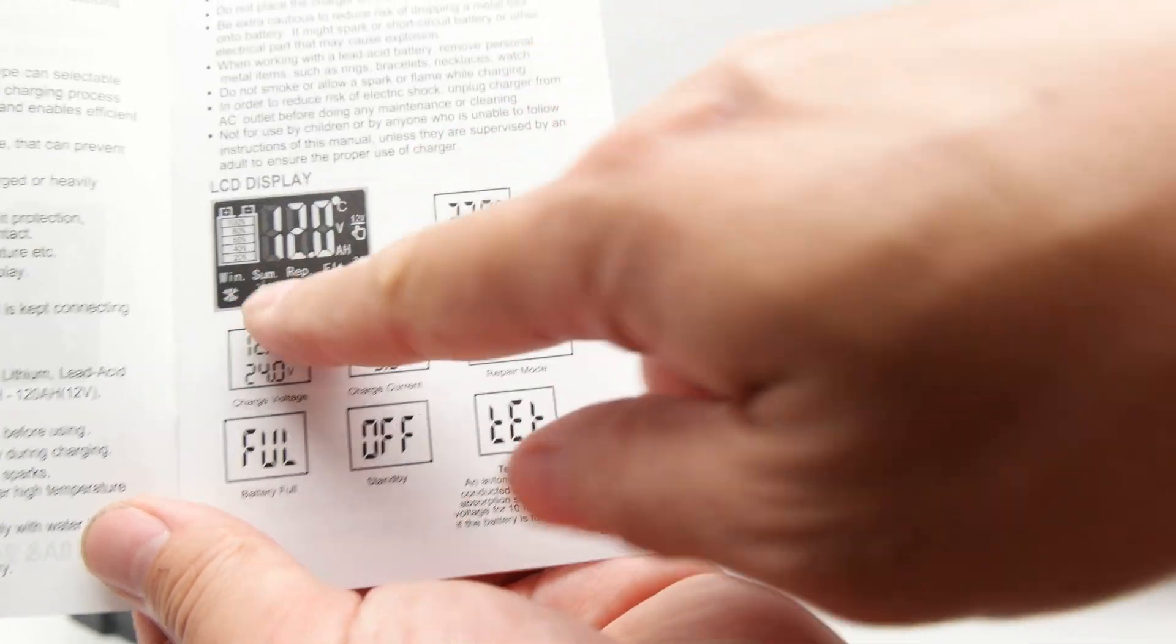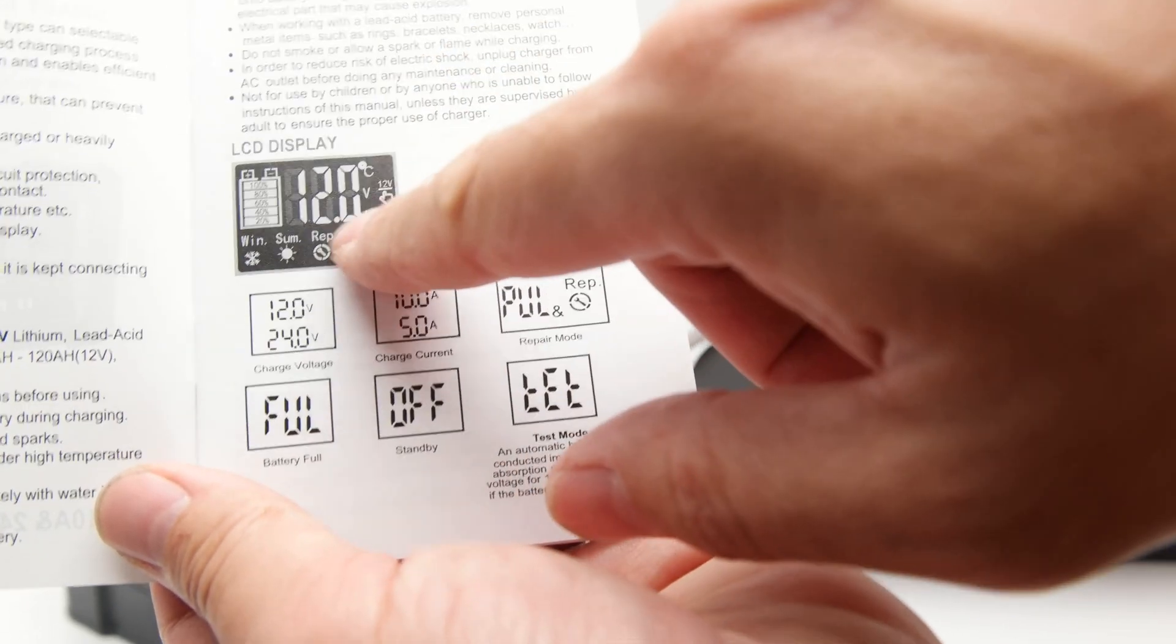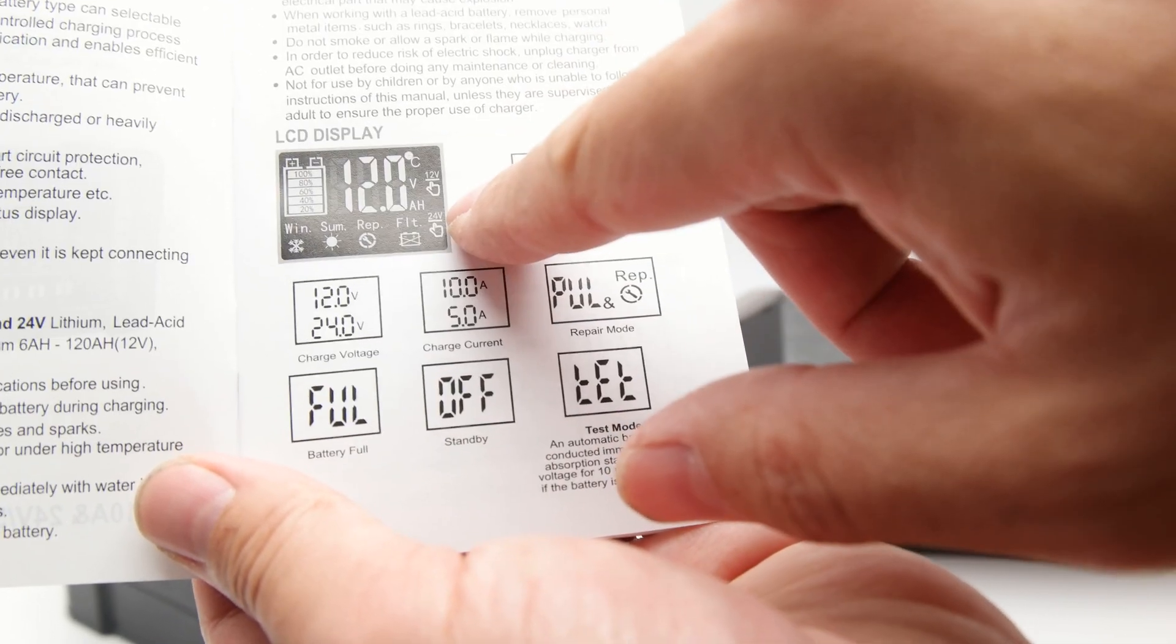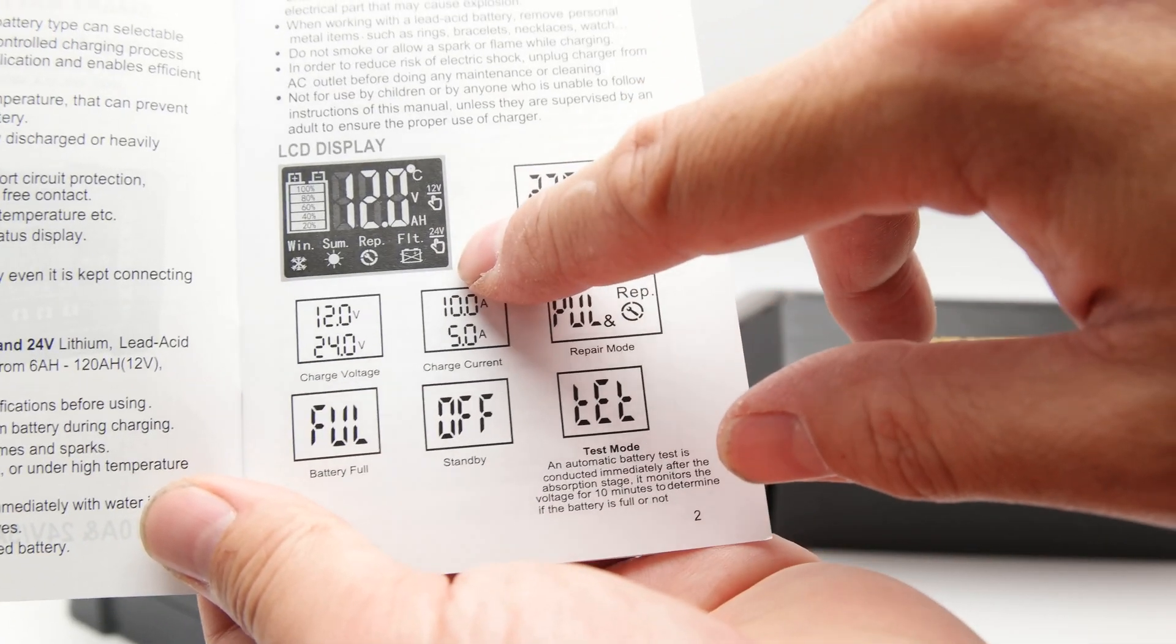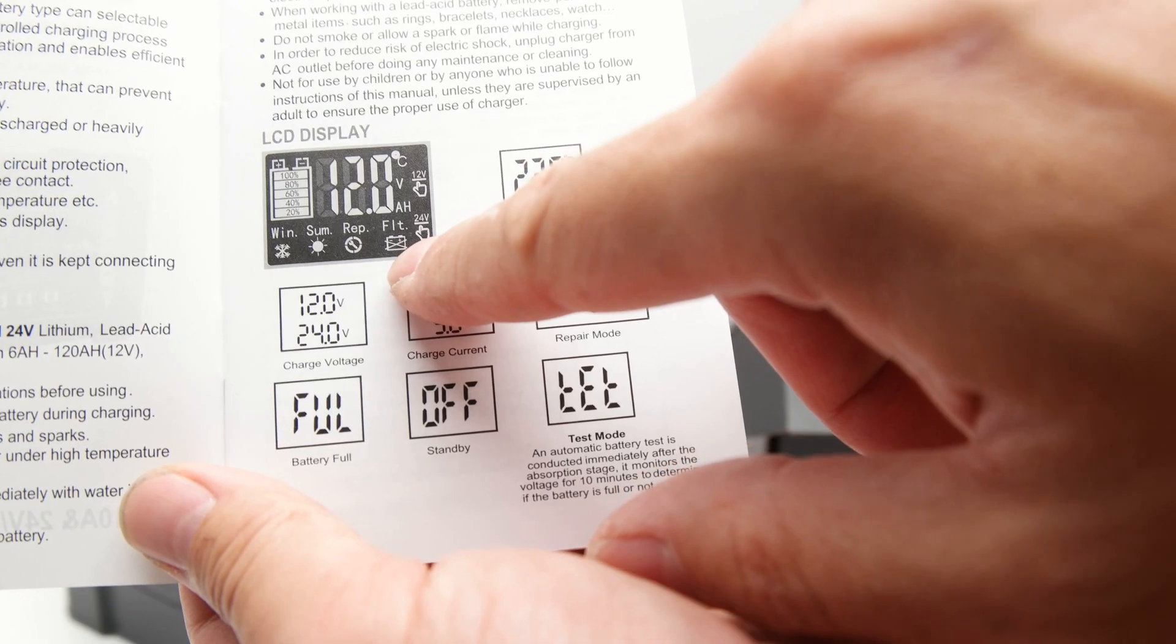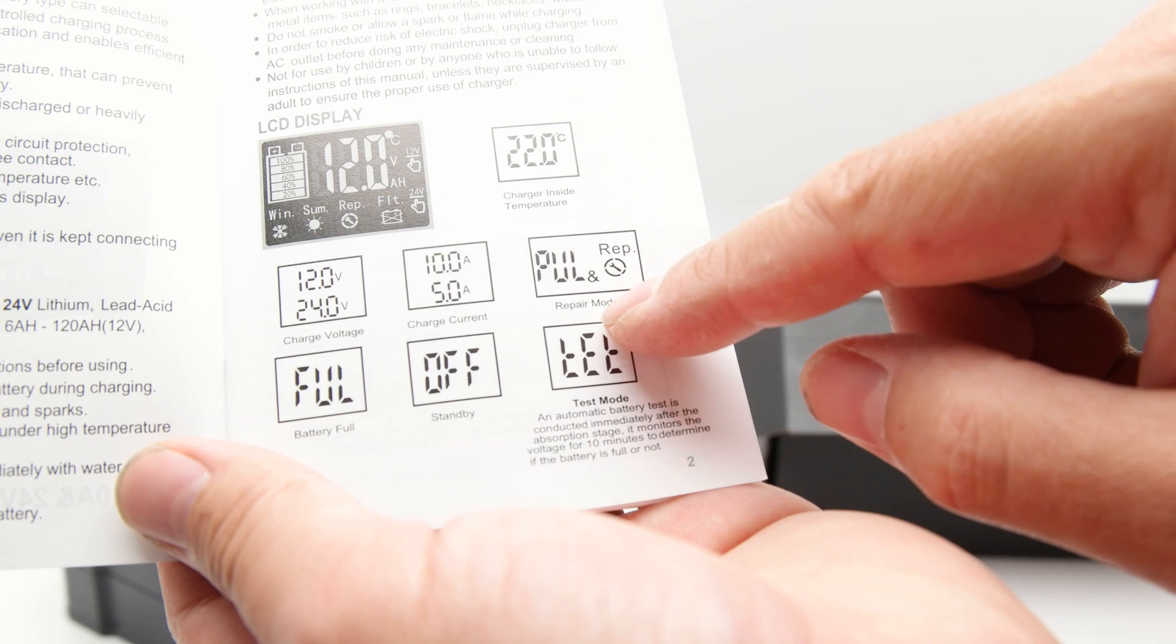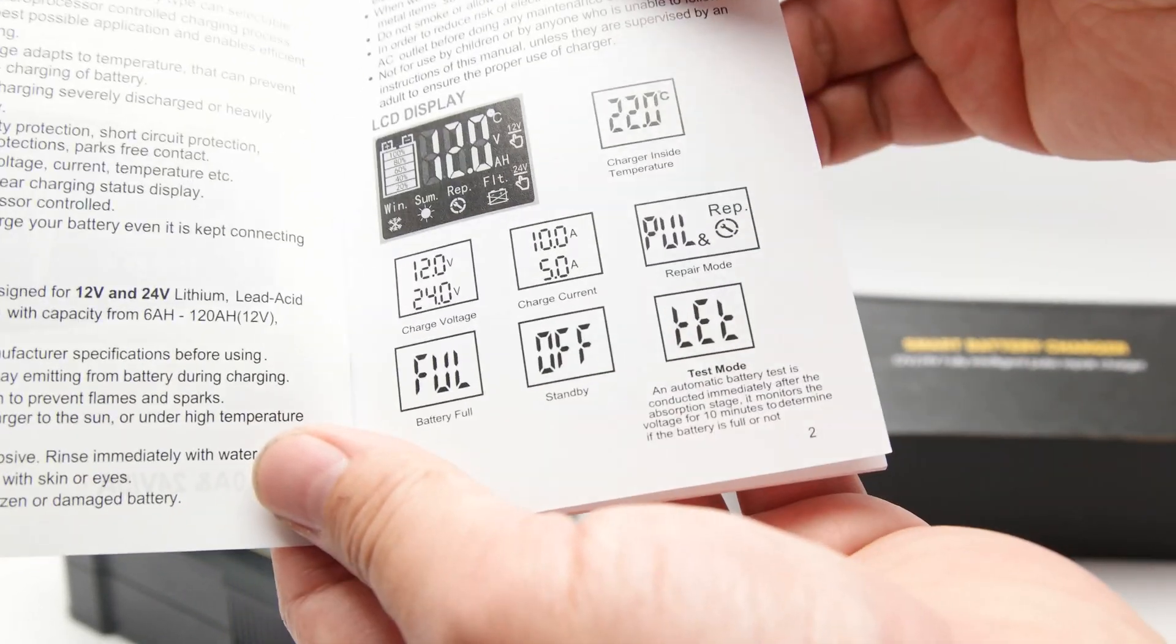As you can see, it gives you a little bit of a percentage, how far it thinks the battery has been charged, let you know the voltage to amps and also the temperature in Celsius and whether or not you chose 12 volts or 24 volts. And if there's going to be a problem with the battery, winter summer settings, apparently, and then a repair mode, which is just pulses charged to it.